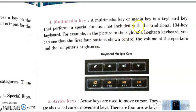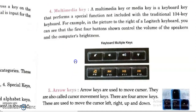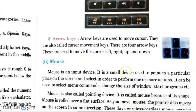A multimedia key or media key is a keyboard key that performs special functions not included in a traditional 104-key keyboard. These keys are used to play multimedia directly from the keyboard, with common functions like mute, raising and reducing volume, brightness, and playing media forward or backward. Finally, the arrow keys on the keyboard are used for navigation — moving up, down, right, and left — and are used to move the cursor in those four directions.